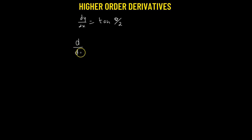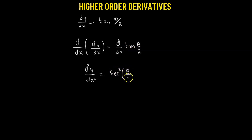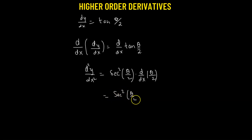Now we take the derivative of both sides with respect to x: d/dx(dy/dx) = d/dx(tan(θ/2)). The derivative of tan is sec², so we get sec²(θ/2). Using the chain rule, we also multiply by dθ/dx, and since θ/2 gives a factor of 1/2, we have d²y/dx² = (1/2)·sec²(θ/2)·(dθ/dx).